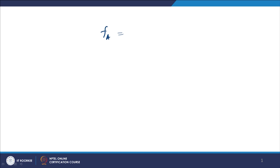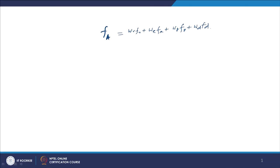How to calculate the weighted average flotation cost — let us understand. The process is: F_a equals W_r times F_r, plus W_e times F_e, plus W_p times F_p, plus W_d times F_d. F_a is basically the weighted average flotation cost, calculated by taking care of all the different sources.